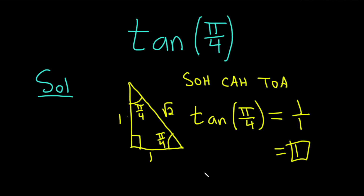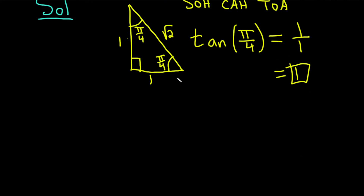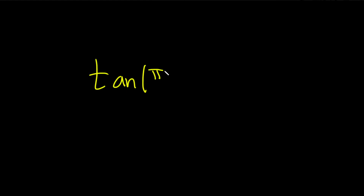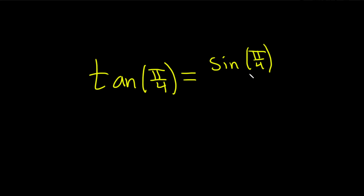So the tangent of pi over 4 is equal to 1. An easier way to think about this in practice is you should know what the sine and cosine are of pi over 4. If you had to compute the tangent of pi over 4 and you didn't want to go through the whole triangle thing, you could think of it as the sine of pi over 4 over the cosine of pi over 4.